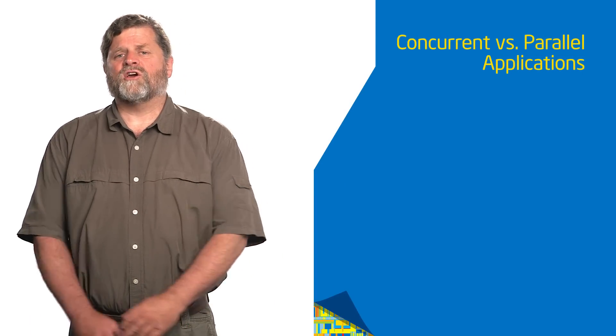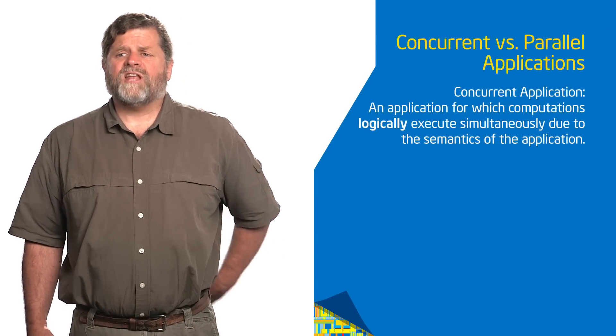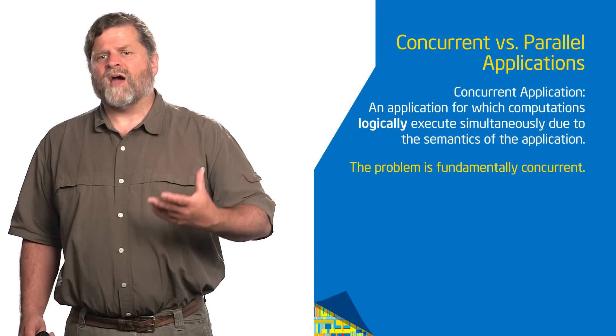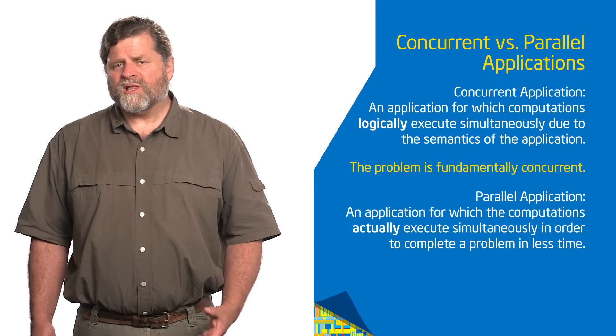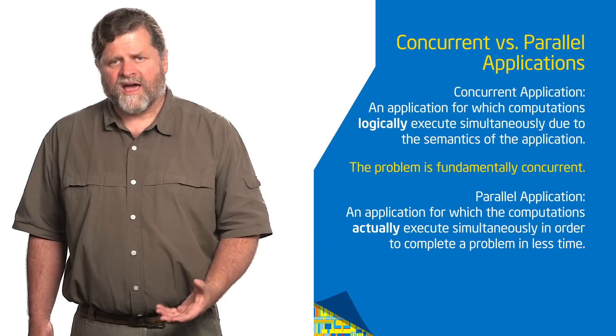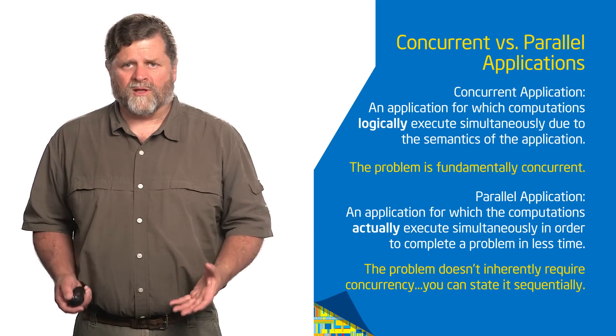Sometimes we talk about an application that is a concurrent application. A concurrent application has concurrency built into the problem definition. Think of a web server — does it even make sense to design a web server that can only take a serial sequence of inputs? That would be nuts. So that's an example of a concurrent application designed to be concurrent from the beginning. A parallel application, on the other hand, has things happening at the same time to make it run faster, or to handle a bigger problem. In a concurrent application there is no way to even define the problem without concurrency. In a parallel application you could do it without concurrency — I can talk about solving a linear system of equations on one processing unit, or I can parallelize it to make it run faster.